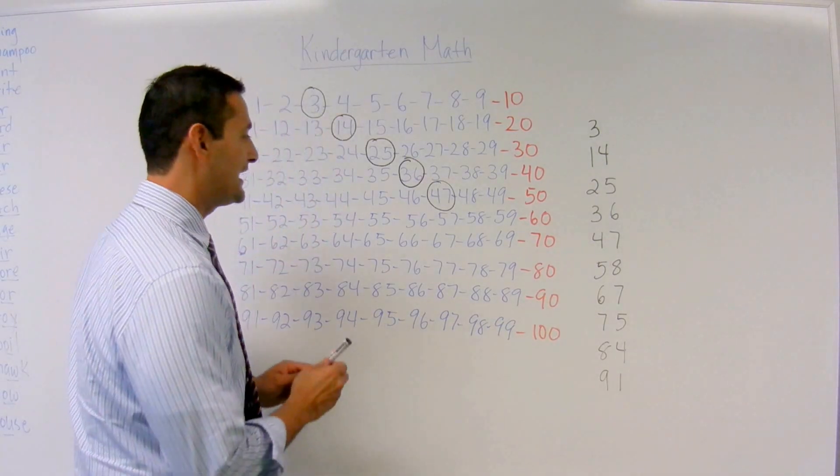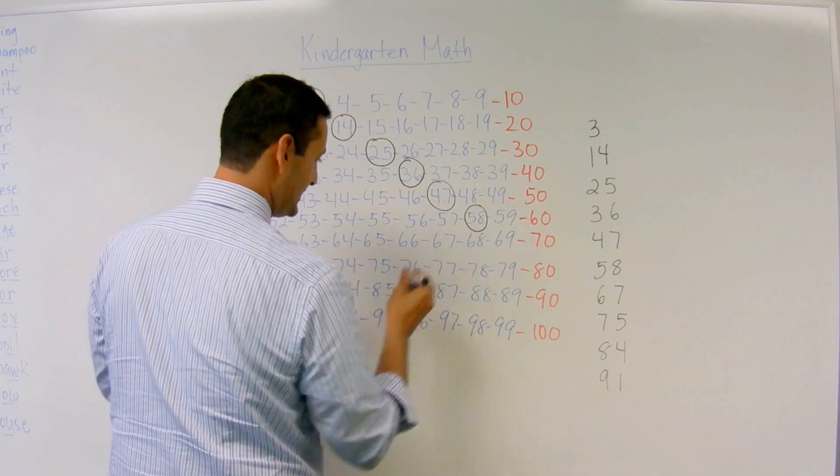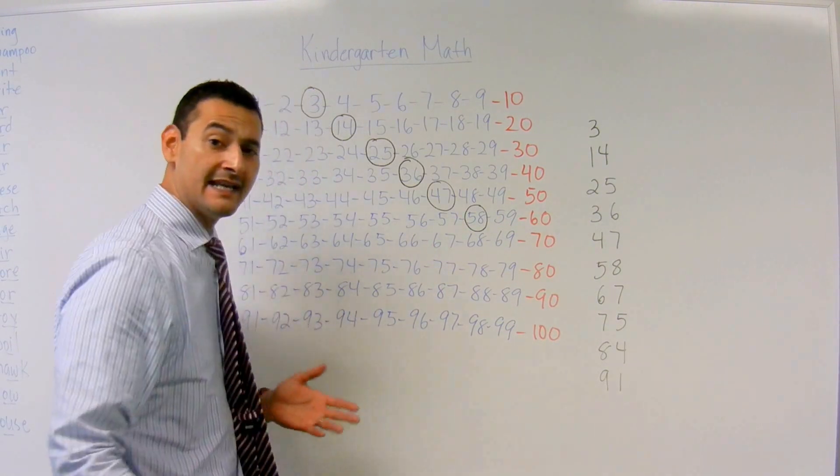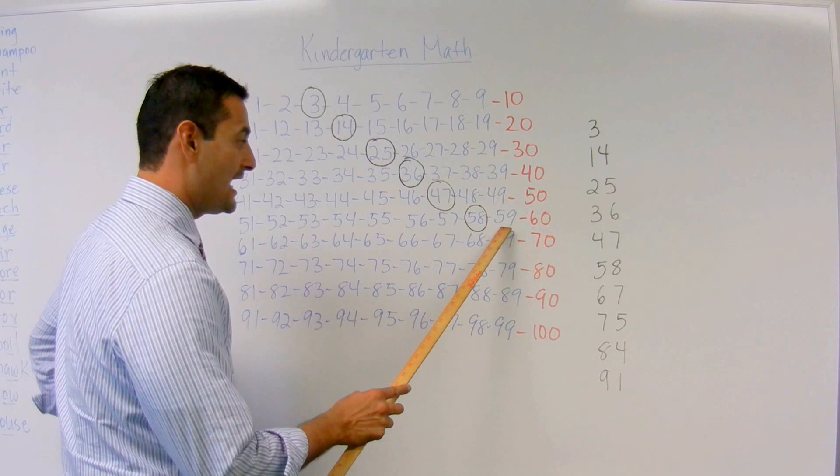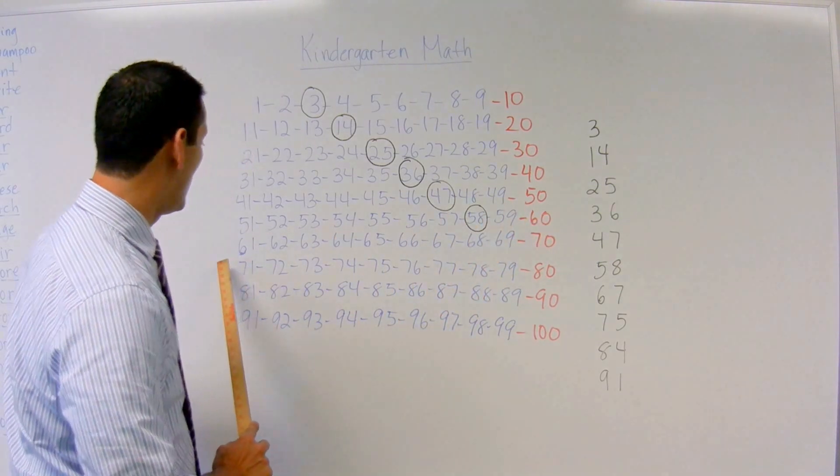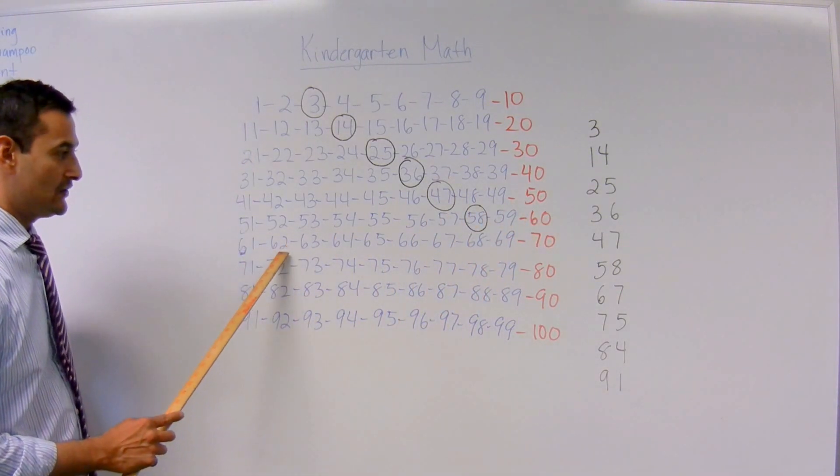Now let's take a look at number 58. I'm going to circle 58, and we're just going to count up a few. You ready? 58, 59, 60, 61, 62, 63.